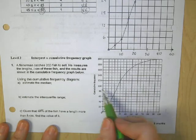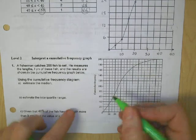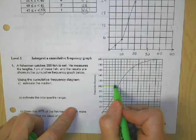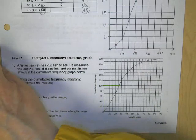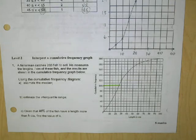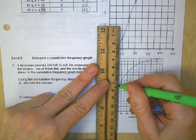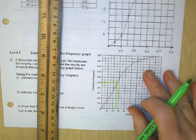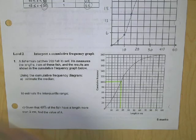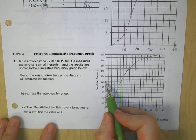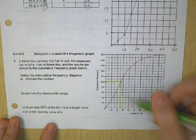There are 200 fish, so the middle fish is between the 100th and 101st — we go with 100. Show your work: go from 100 on the Y-axis across to the graph, then straight down. It's best to use a straight edge. Without my glasses it's a bit hard, but it looks like the median is around 26 or 27.